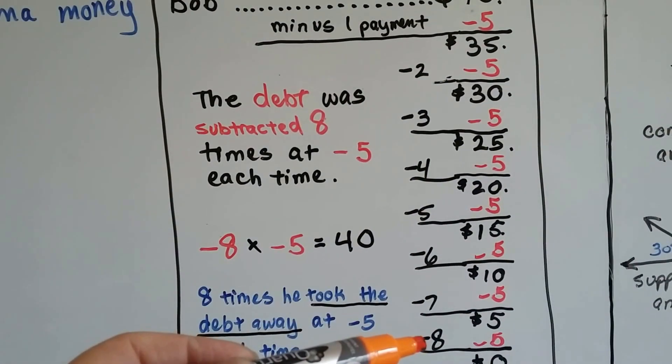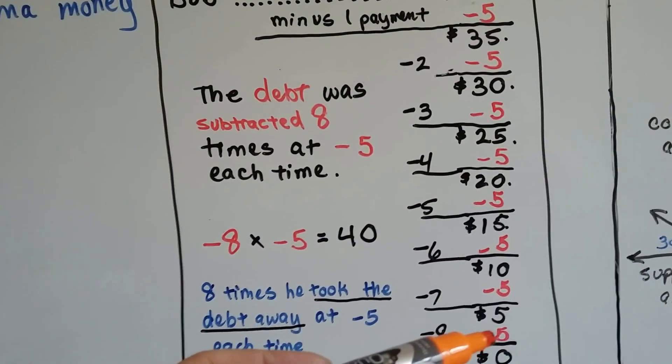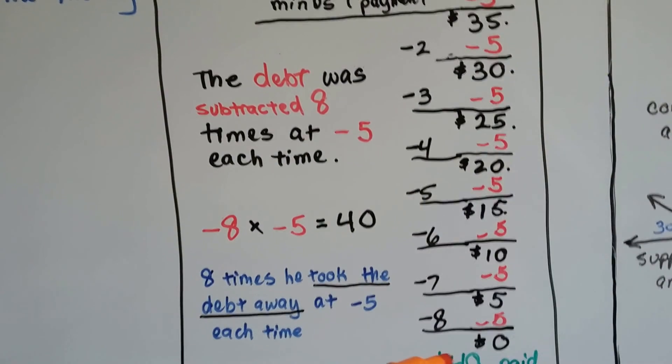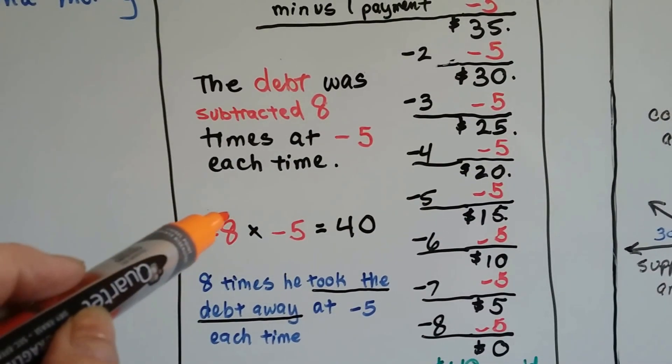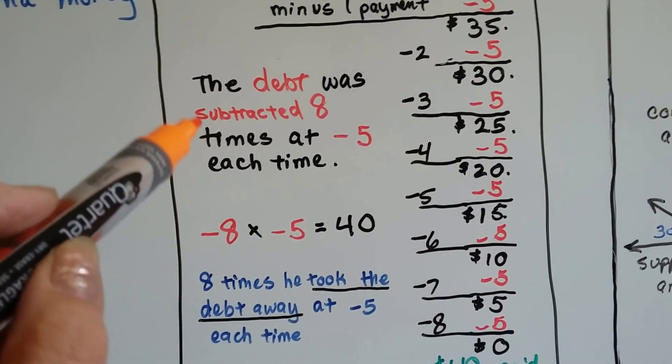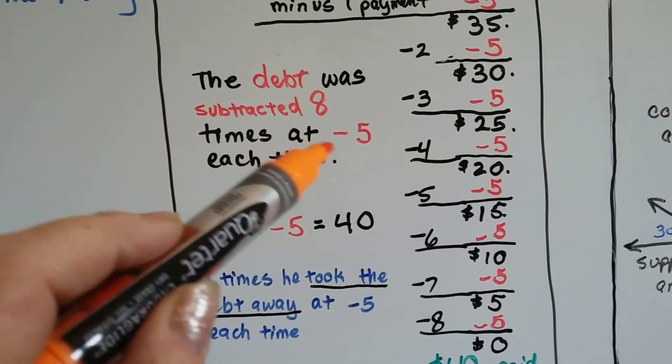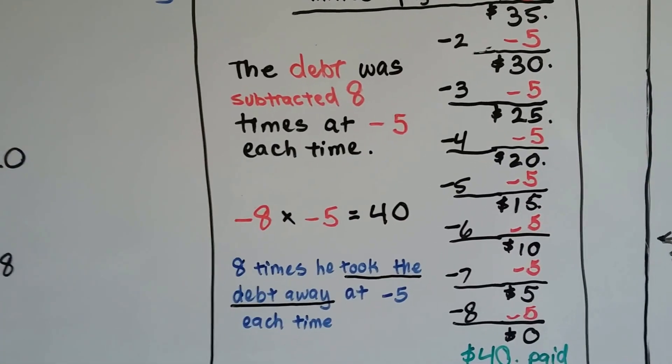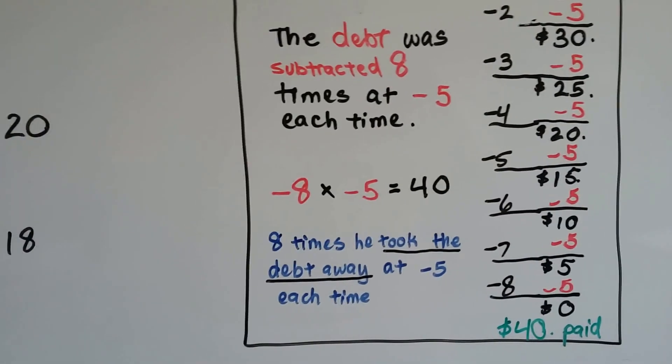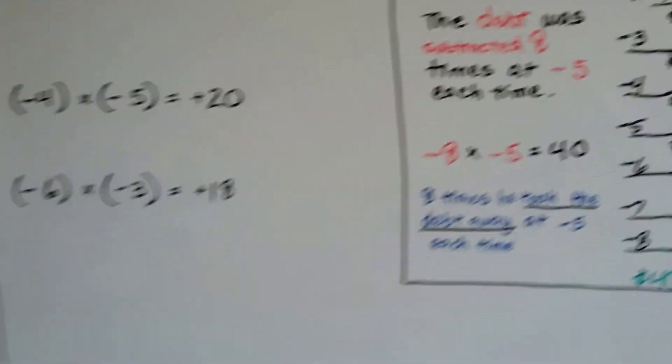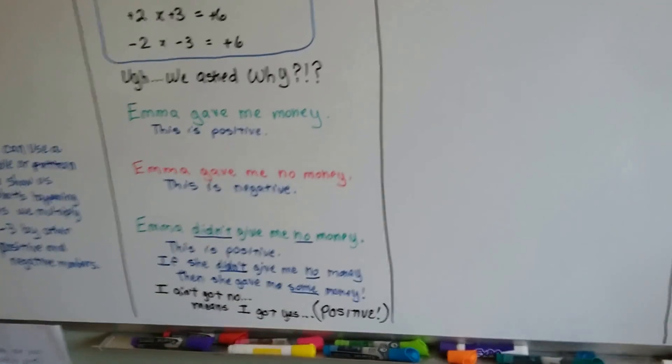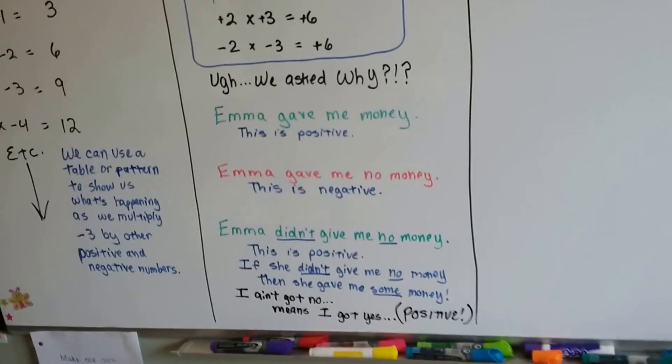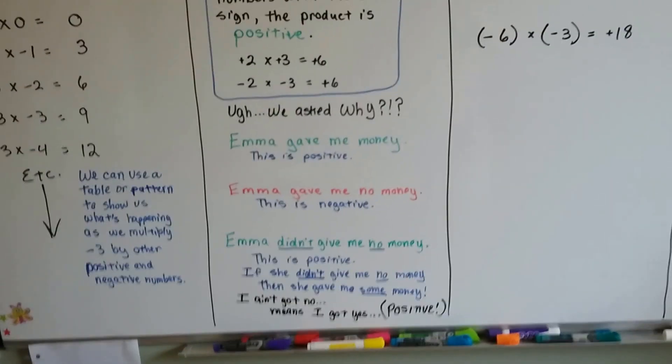And then after eight weeks, she's taking away eight pieces of the debt and he's given her $5. The $40 is paid. Take away the debt. Subtract it eight times at $5 each time. That's a negative eight times a negative five. And that's a positive 40. Does that make sense? So hopefully between the money and the words, you understand that two negatives make a positive.